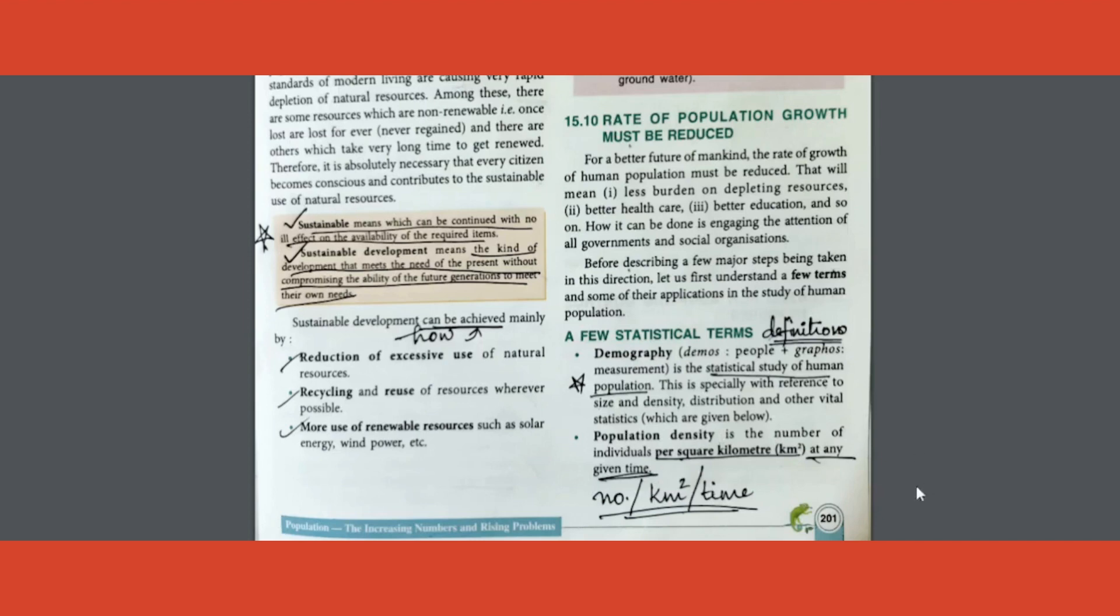Three points you are writing: one, number of individuals, right here. Per square kilometer, per square kilometer. After that, you have to write at any given time. That's why I have marked it like this. All the three parts you should write. Only then you get that one mark: number of individuals per square kilometer and given time.